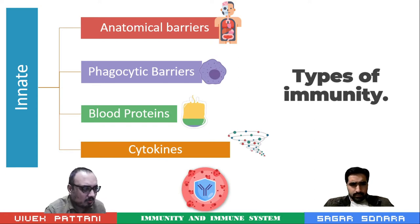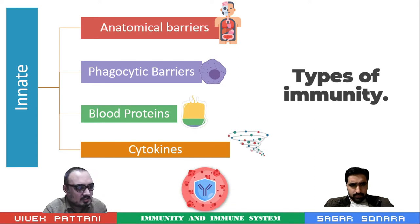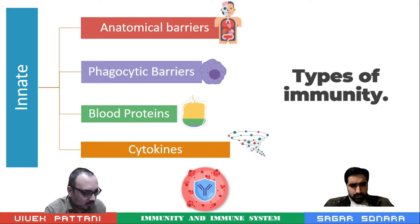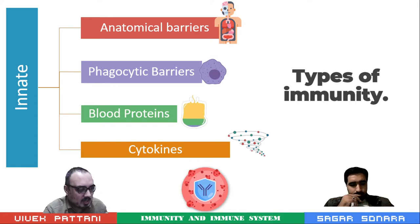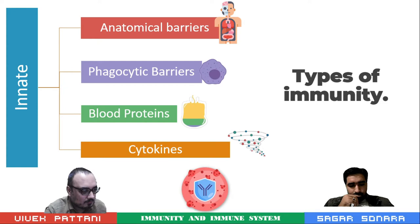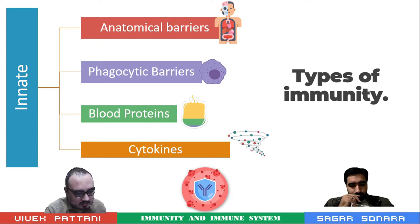Anatomical barriers include skin and mechanical barriers such as mucous membranes. Phagocytic barriers include neutrophils, macrophages, and natural killer cells.